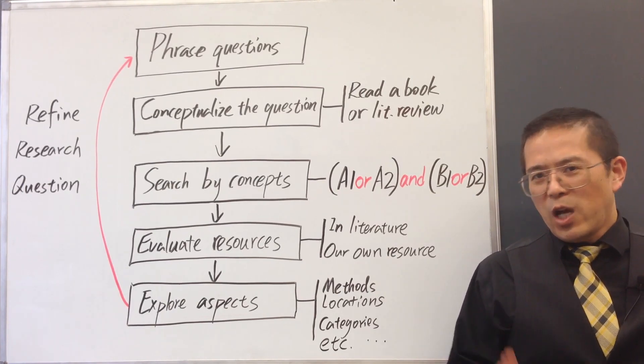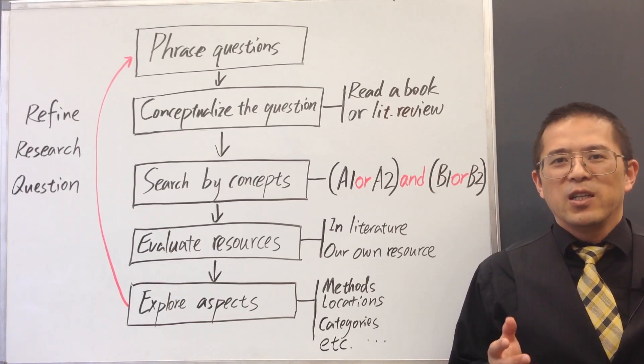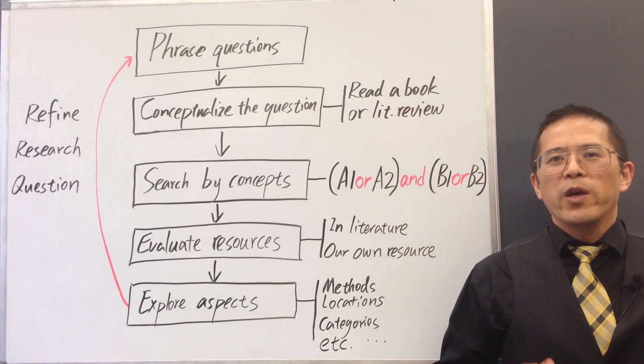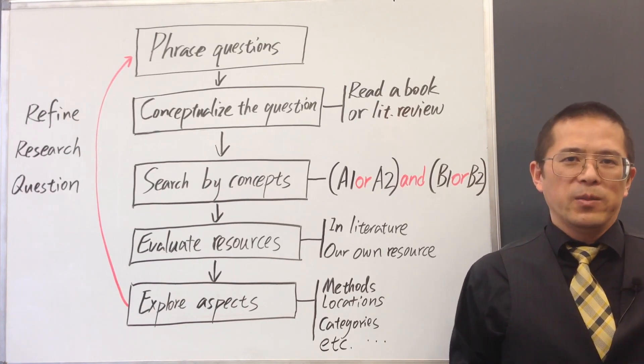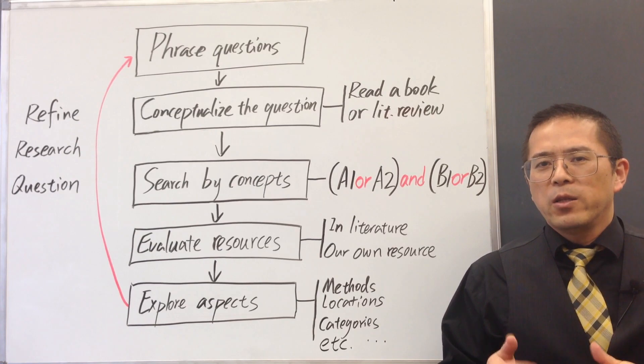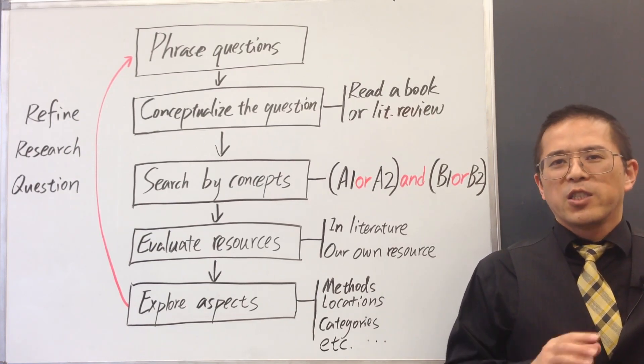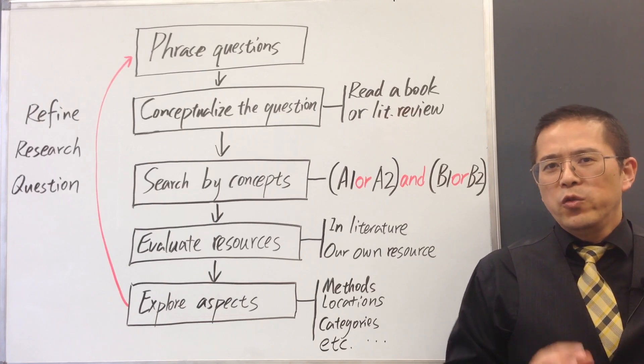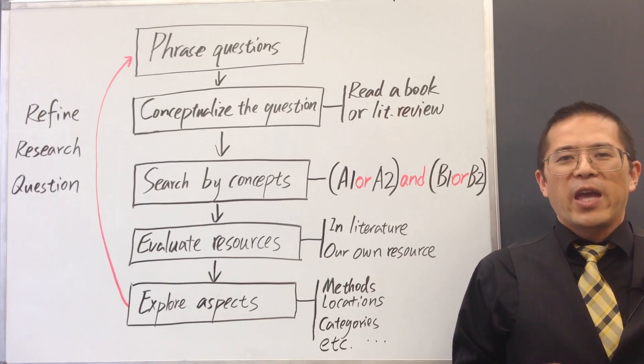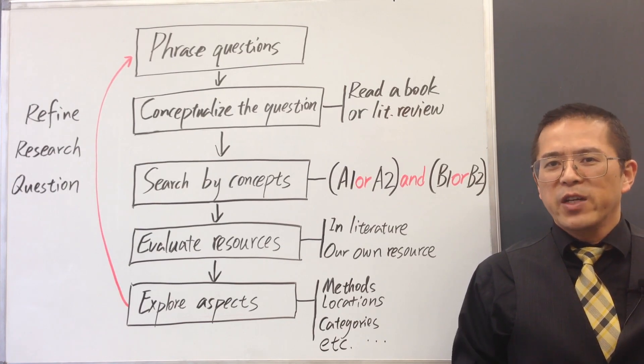Usually, the narrower our research topic, the less related studies we can find in literature. For a well-focused research topic, we should be able to find the right amount of related work in literature that we can handle. The topic should not be too broad to handle, and it should also not be too narrow to have a significant impact that we want.